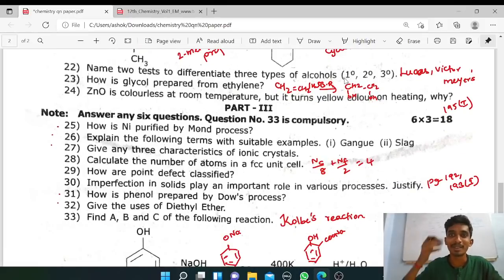Lucas test and Victor Meyer test, but two marks. Two marks for these tests. How will you differentiate primary, secondary and tertiary alcohol? Answer: Lucas test and Victor Meyer test. That's the two marks. Next, 23rd question: how is glycol prepared from ethylene?